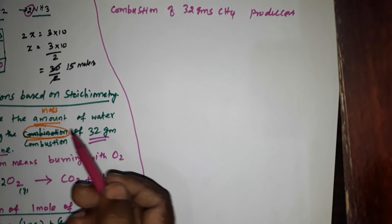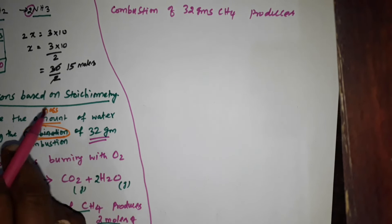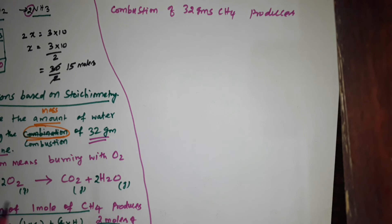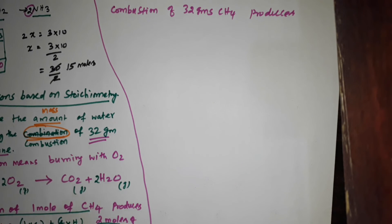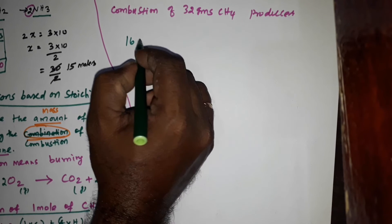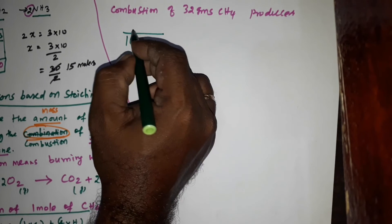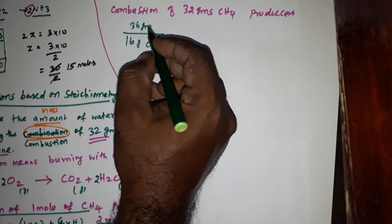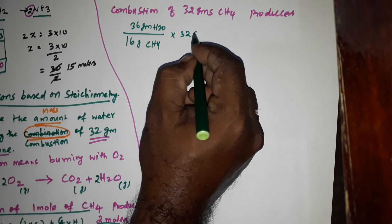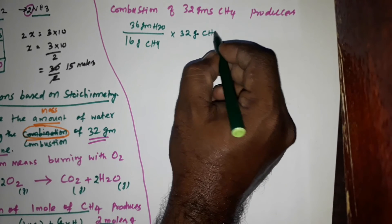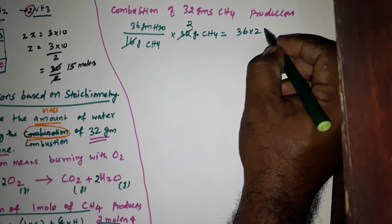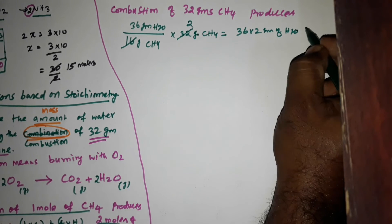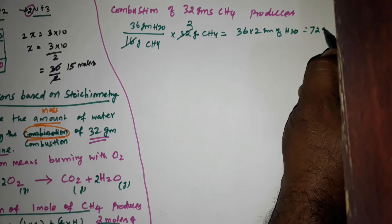32 grams of methane will produce how much grams of water? 16 grams of methane gives 36 grams of H2O, then 32 grams of methane will produce how much water? Cancel and calculate: 36 × 2 grams of H2O equals 72 grams of water.